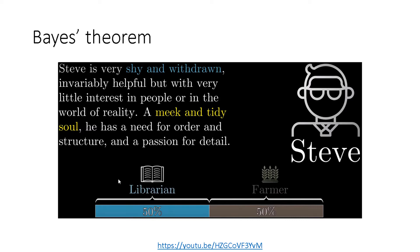The first time I saw this, I thought Steve was a librarian. But I forgot to mention that there is a proportion of librarians to farmers to consider. In the US currently the proportion is 60 to 1, but in this research the proportion is more like 20 to 1 — meaning for one librarian, you have 20 farmers. You do have to take that into consideration when answering this question.